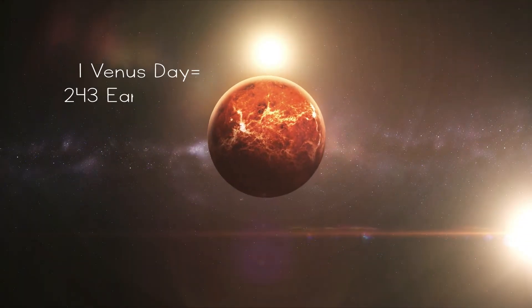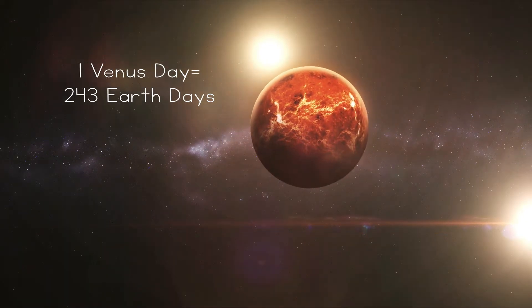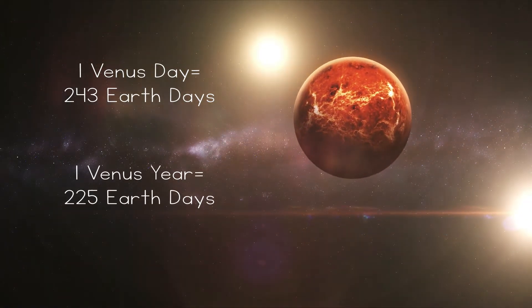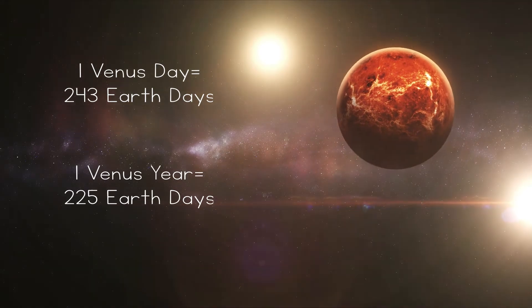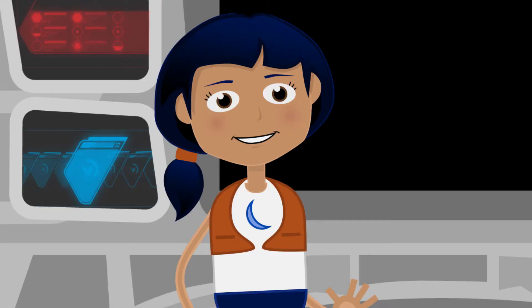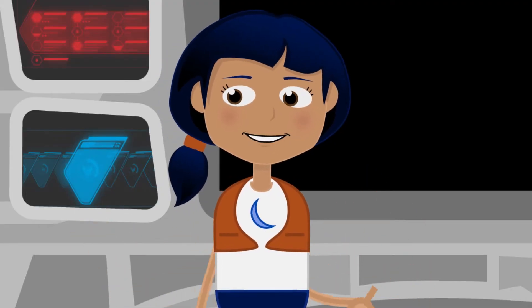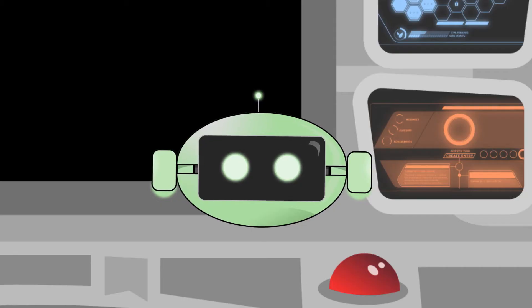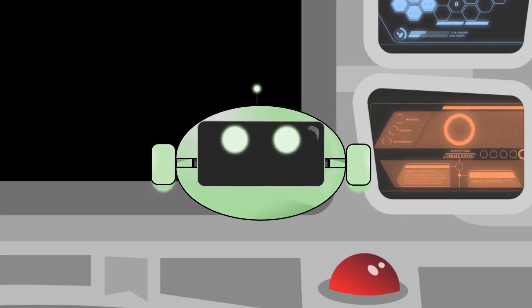One day on Venus is 243 Earth days, while one year is 225 Earth days. Wait, one year is longer than one day on Venus? Yes! It takes Venus longer to rotate on its axis once than it does to orbit around the sun. That's interesting.